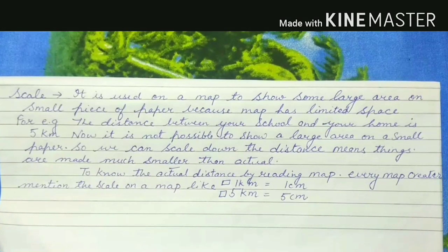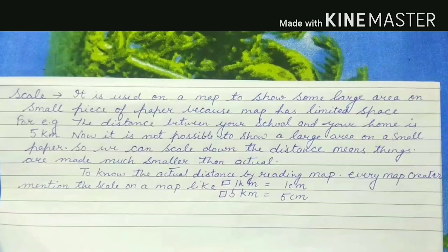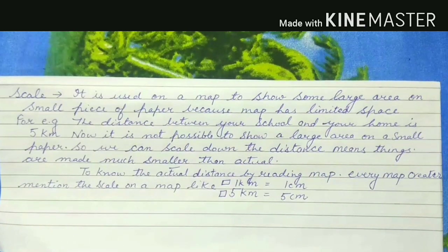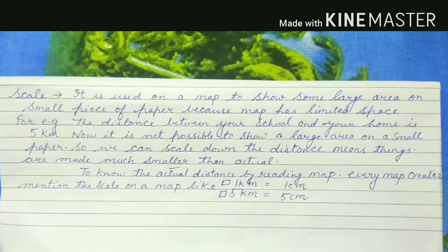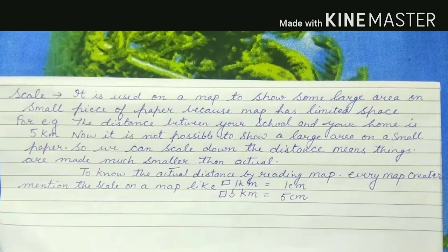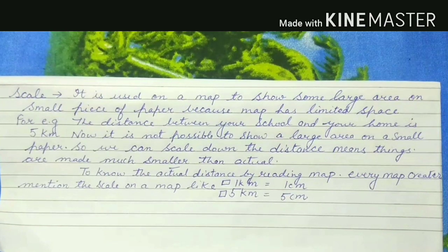Our third component of a map is scale. We use scale on a map to show a larger area on a small piece of paper. Because a map has limited space, we are not able to show large features at actual size. For example, the distance between your school and your home might be 5 km, which is a large distance and cannot be shown directly on a map. So map makers scale down the distance — they make the large area smaller.